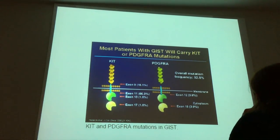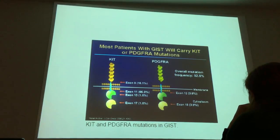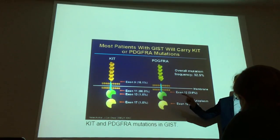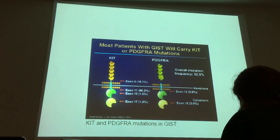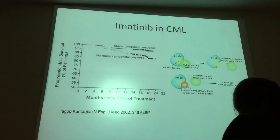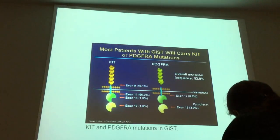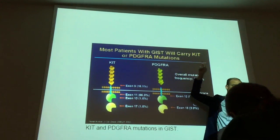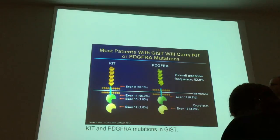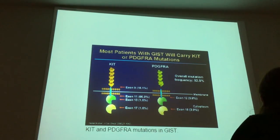Interestingly, imatinib also works in gastrointestinal stromal tumors (GIST), which very likely develop either a KIT mutation or a PDGFR mutation. Imatinib is not so specific — it blocks BCR-ABL but also blocks KIT and PDGFR. GIST is a tumor from the GI tract, a kind of sarcoma, also a more or less simple disease with one mutation. So we use the very same drug in a totally different disease — and it works.